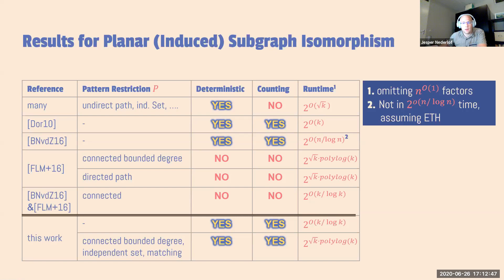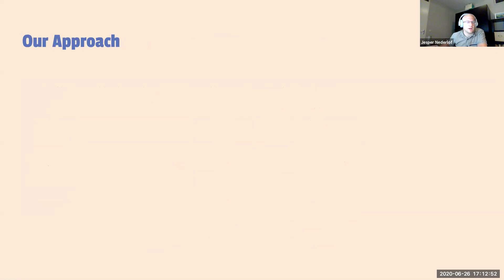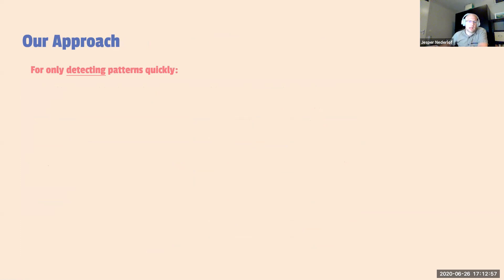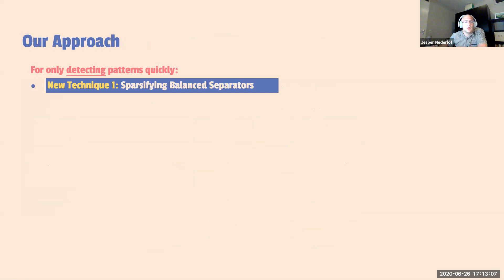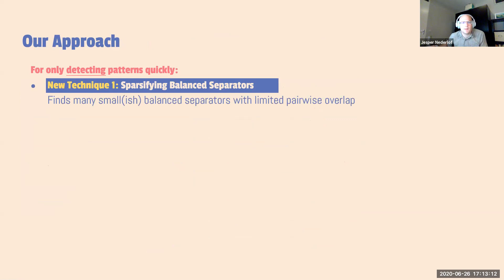On the approach: if you're only interested in detecting patterns quickly, you need only one of the two techniques in the paper — sparsifying balanced cycle separators. It finds a family of smallish balanced separators with limited pairwise overlap. The proof ingredients involve Baker's technique, an adjusted proof of the Planar Grid Minor theorem, and a generalization of Magnus's theorem from prior work by Fomin et al. Because the separators are pairwise disjoint and we have only K vertices in the pattern occurrence, there must be one separator with few pattern vertices, which we use to decompose the problem into sub-problems.